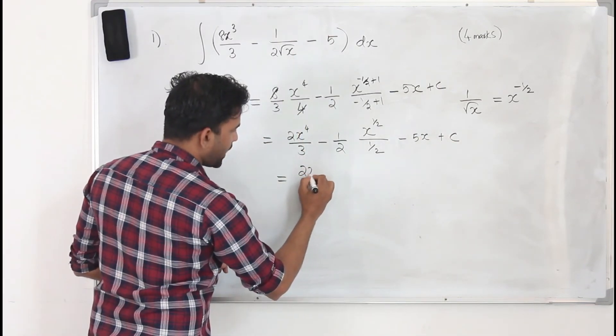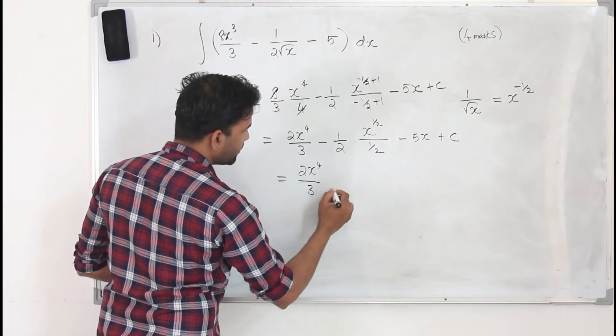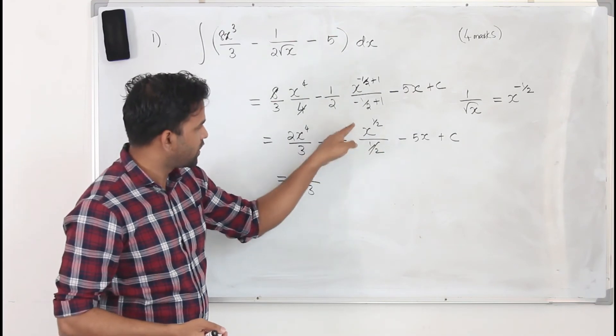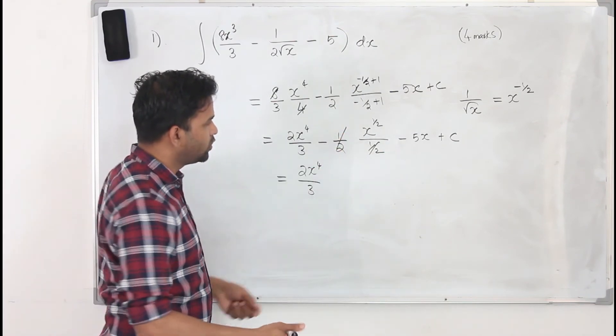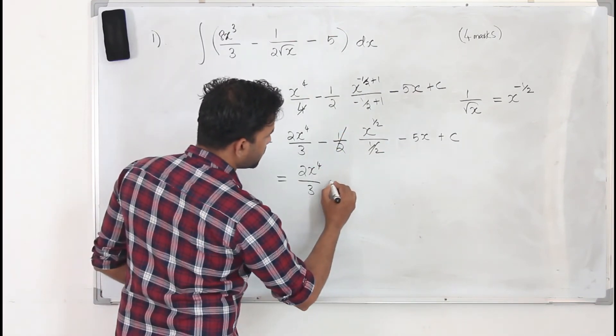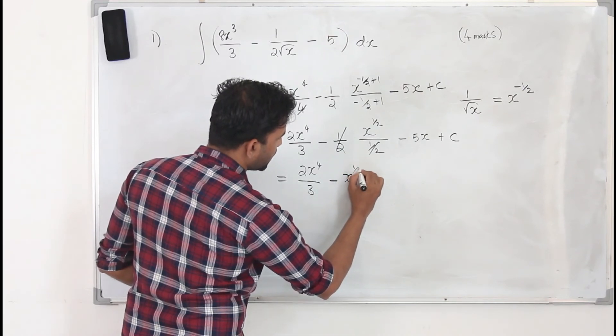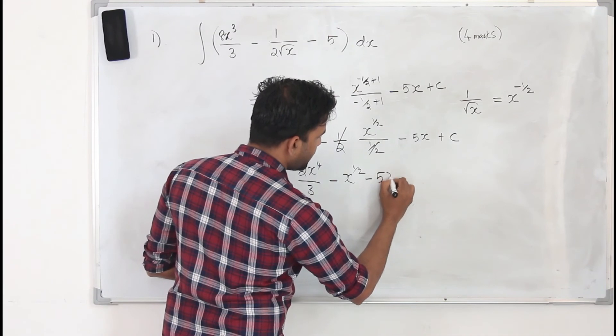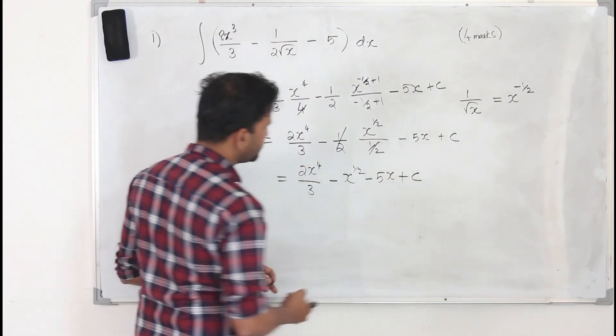Which is 2x to the power 4 by 3. You can cancel this. Because the 2 eventually is going to go up, so you can cancel out 2. So minus x to the power 1/2, or you can write it as square root of x, minus 5x plus c. That's all.